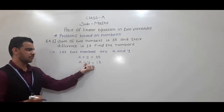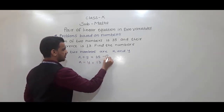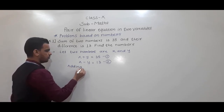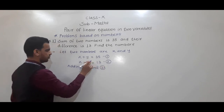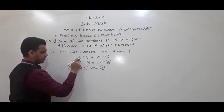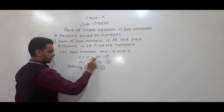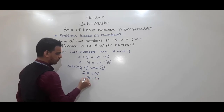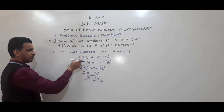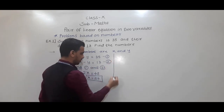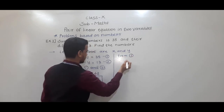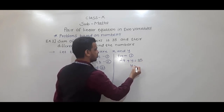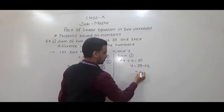So x plus y equals 35 and x minus y equals 13 are two linear equations. Adding equation 1 and equation 2, plus y and minus y cancel. We get 2x equals 35 plus 13, that is 48, so x equals 24. Putting x equals 24 in equation 1: 24 plus y equals 35.